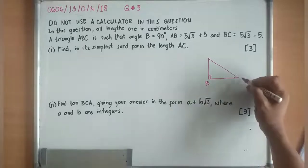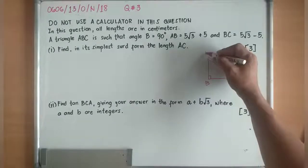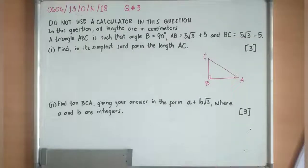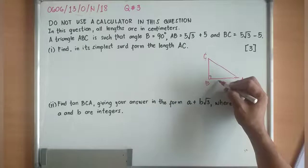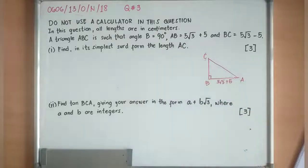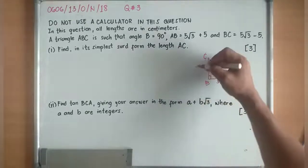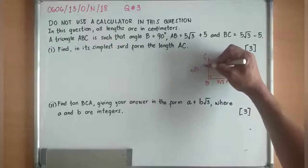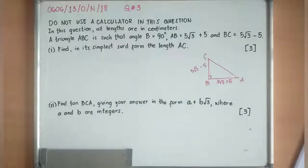So this is 90 degrees. Definitely I can put A or B or C anywhere. So it says AB is 5√3 + 5 and BC is equivalent to 5√3 - 5.